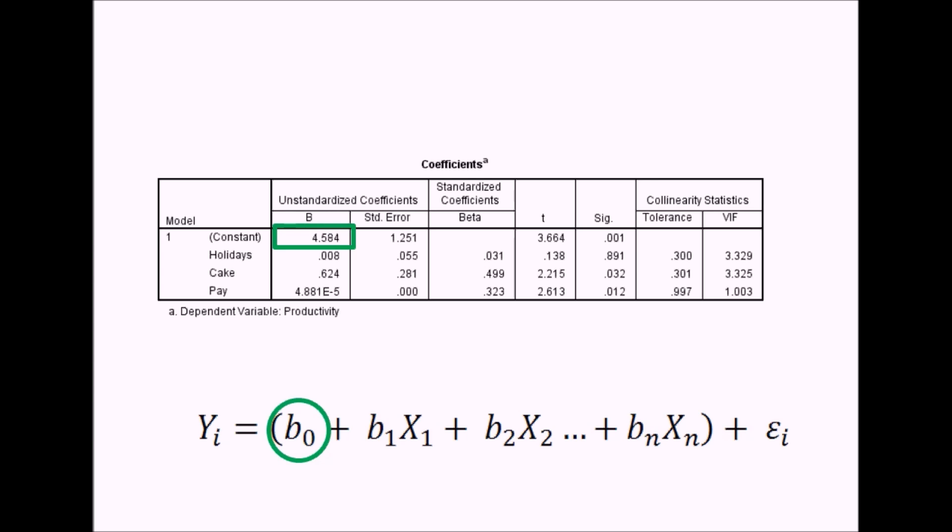You can then go on to the next line, which is the unstandardized coefficient for holidays. This would be your b1 in the regression equation here. This is the rate at which one unit change in holidays would predict the unit change in productivity. For each unit change in holidays, we'd expect productivity to rise by 0.008. The same for cake. You'll notice the only difference between this and simple regression is we've got multiple coefficients for the variables. We've got a coefficient representing each of the variables in the equation, and it's the combination of these coefficients which calculates the predicted value of y, or the predicted value of productivity.